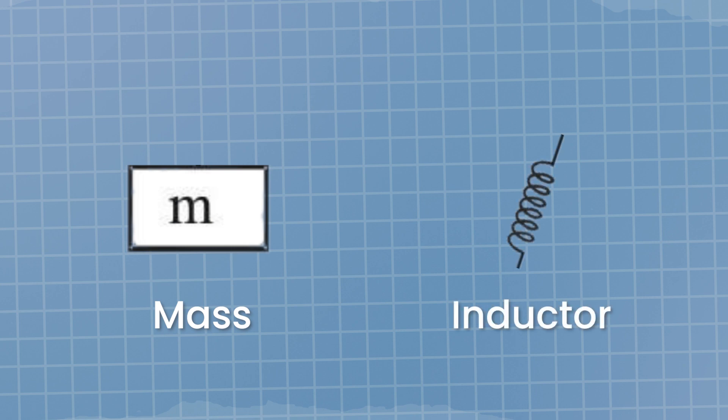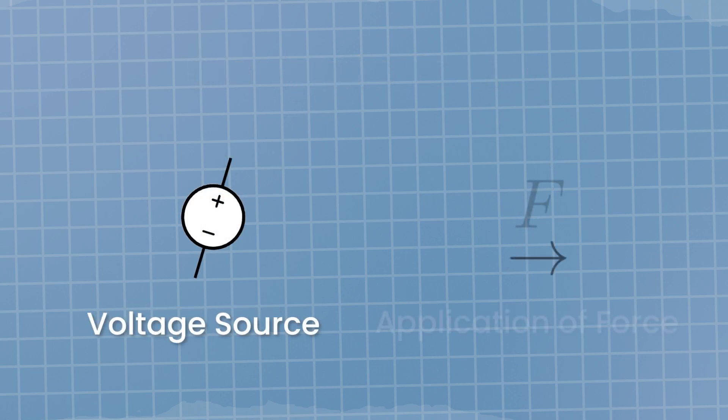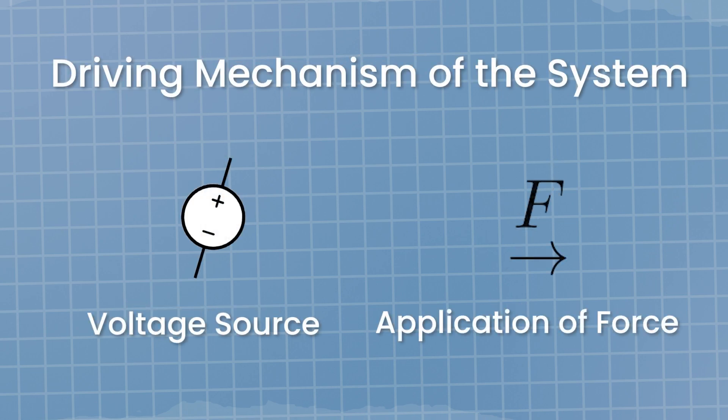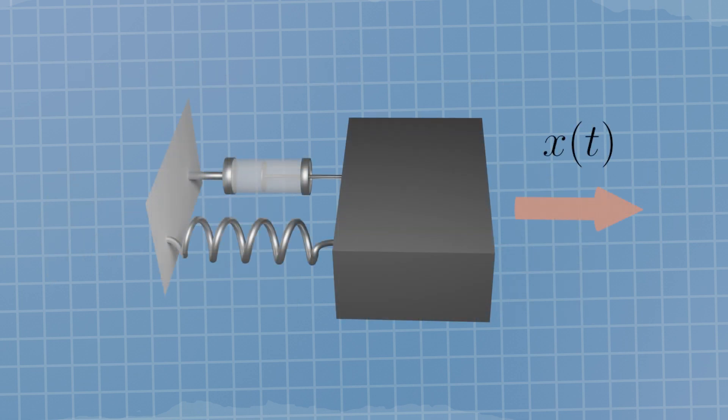In fact, we can see a spring as a capacitor as it stores potential energy, the mass to an inductor as it stores kinetic energy, a damper to a resistance as both dissipate energy, and a voltage source to the application of force as a driving mechanism of the system. A current source is not considered since we are talking about voltage driven systems. In the mechanical systems, it would equate to the prescription of the movement and this is, in our context, the unknown in the problem.